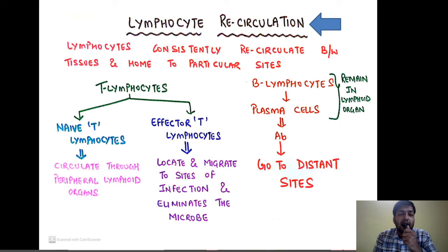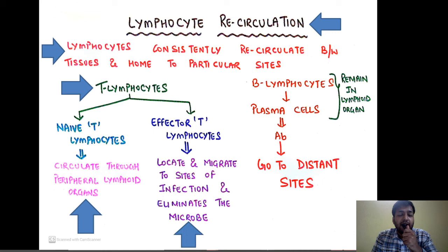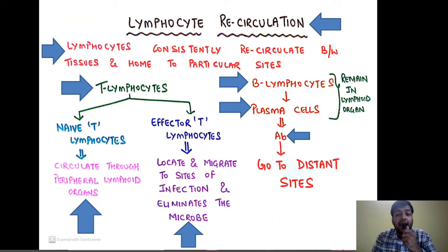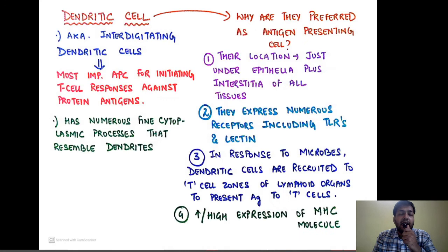Lymphocytes consistently recirculate between the tissues and home to particular sites. Naive T lymphocytes circulate through the peripheral lymphoid organs, whereas effector T lymphocytes migrate to the sites of infection to eliminate the microbe. B lymphocytes and plasma cells remain in the lymphoid organ; once an antigen is presented to them, they secrete antibodies that travel to distant sites to kill microbes.